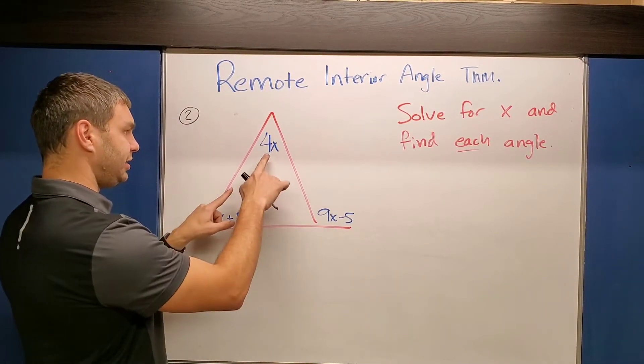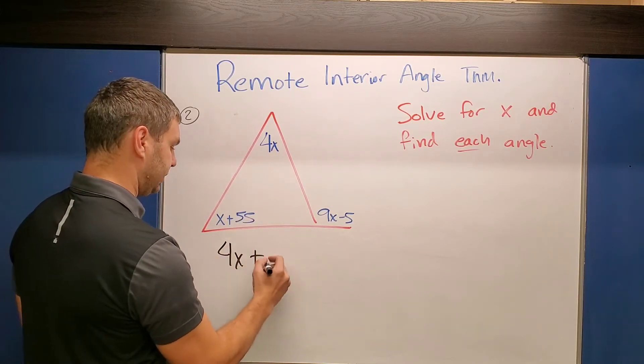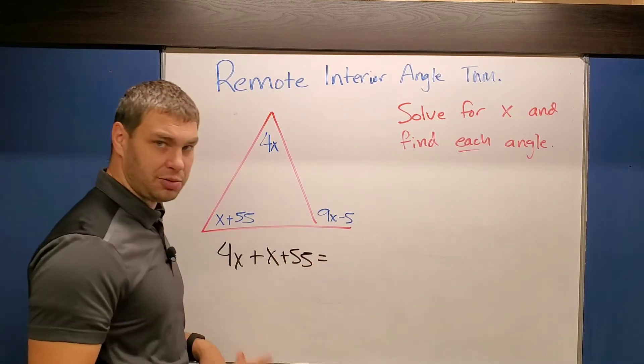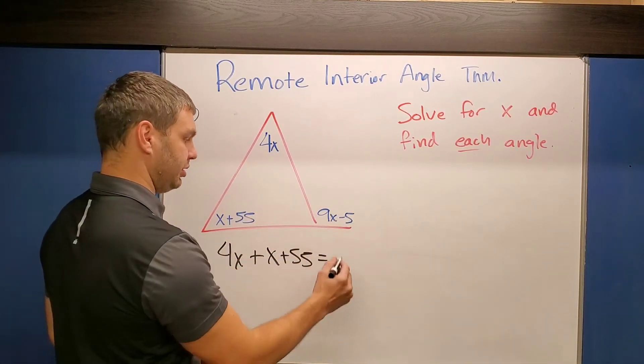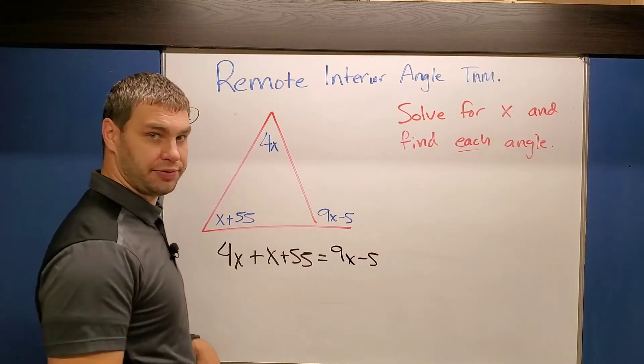All right, so real quick I can still take my two inside values, the 4x plus the other angle X plus 55. And that's going to equal my exterior angle that's remote, in this case 9x minus 5. All right, so real quick let me solve for X for you.